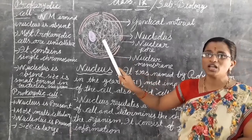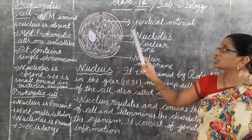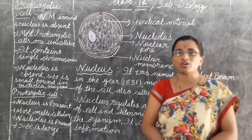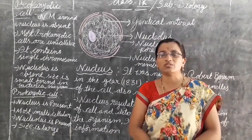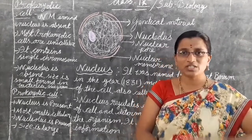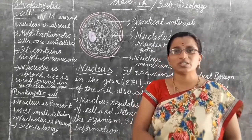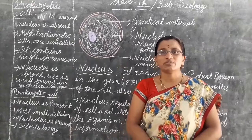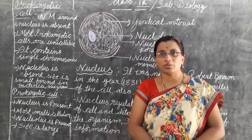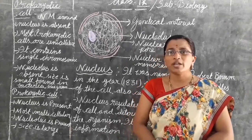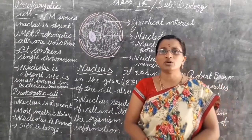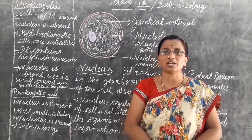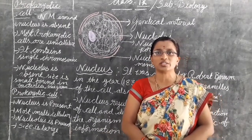The nucleus consists of genetic material. Through these genetic materials, the genes present in the parents are transferred to their offspring. Based on the presence and absence of the nucleus, cells are of two types: prokaryotic cells and eukaryotic cells.